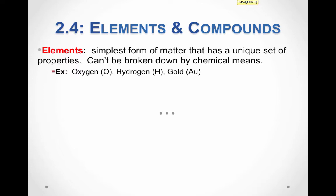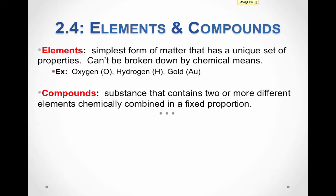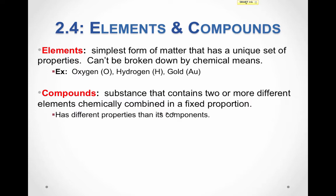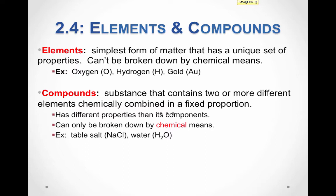Some examples of elements include oxygen, hydrogen, and gold — anything on the periodic table is an example of an element. Compounds, on the other hand, are substances that contain two or more different elements chemically combined in a fixed proportion. Compounds have different properties than the elements that make them up, and they can only be broken down by chemical means. We can't physically separate the atoms in a compound; we have to chemically separate them. Examples include NaCl and H2O.